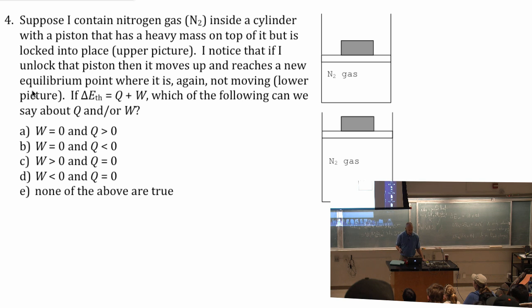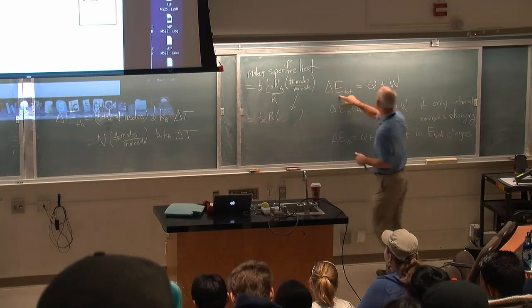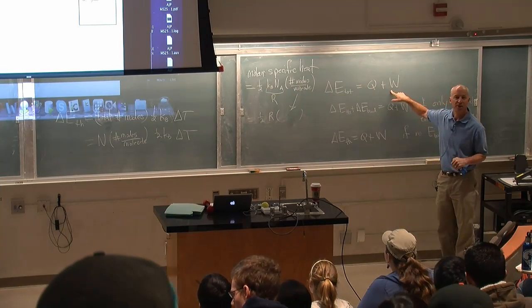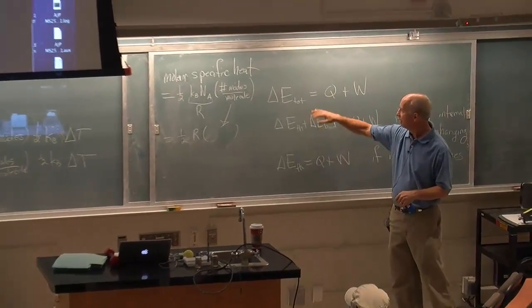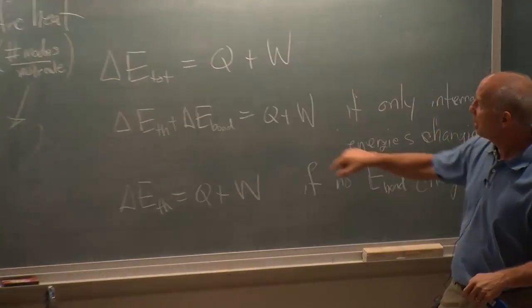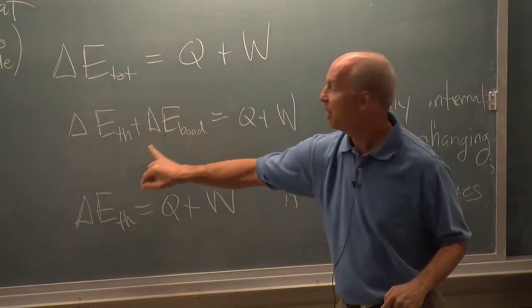If delta E is Q, delta E thermal. So I'm essentially telling you at this point we always know that delta E total is Q plus W. I'm saying if delta E thermal is Q plus W, so I'm saying only internal energies and no bond energy.